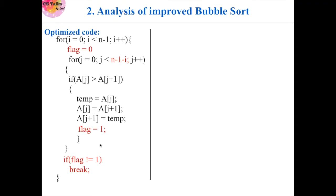If we add these two constraints to standard bubble sort, we get the optimized bubble sort. Here we use a flag variable to check whether the input array is already sorted, and we reduce the number of comparisons from n-1 to n-1-i. For a more detailed explanation, please watch the previous video linked in the description.